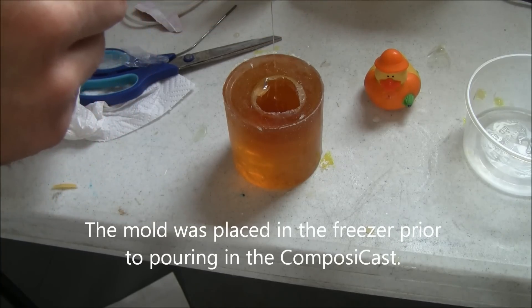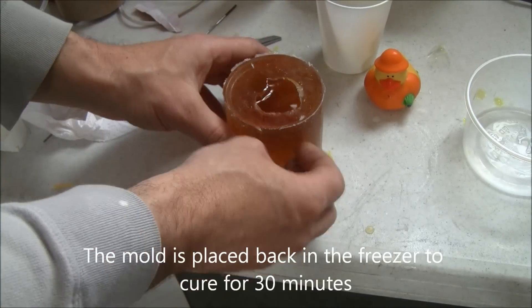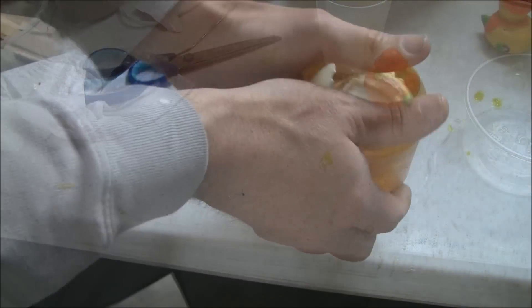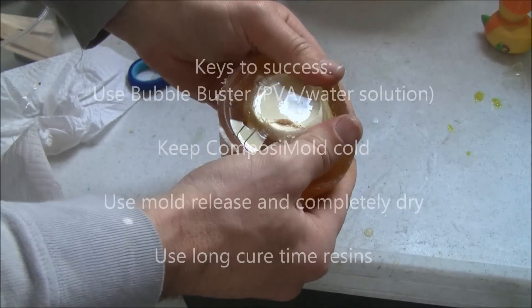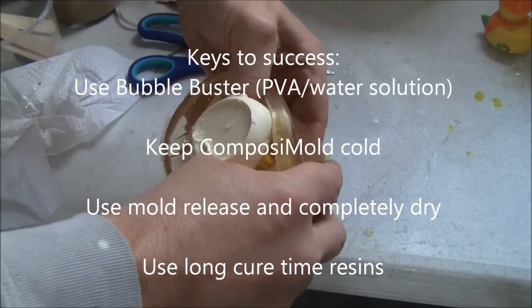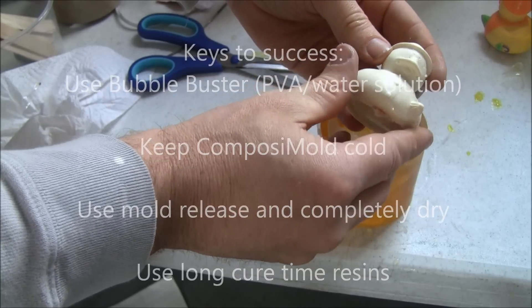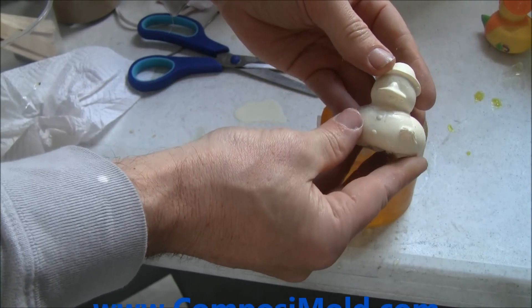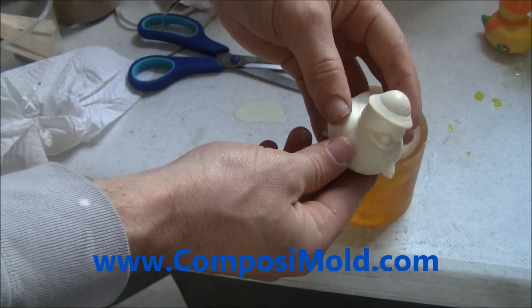The keys to success for urethane resin casting is to use bubble buster when making your molds. Keep the ComposiMold cold throughout the process. Use a mold release designed for urethane resin and make sure it is completely dry before pouring in any urethane resin. And if possible, use a longer cure time resin system.